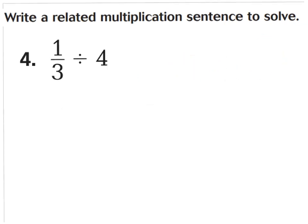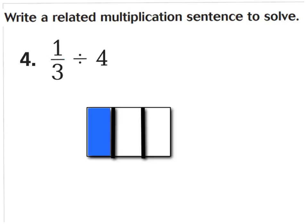For number four, the question says one-third divided by four. So we're going to look at what is one-third of a whole divided into four parts. It would look like this model. We would have one-third, just like this picture, and then we're going to divide this one-third into four parts. I'm going to draw three lines going across to show four different parts. Do you see how we have this one-third and we're dividing it into four parts? One, two, three, four.